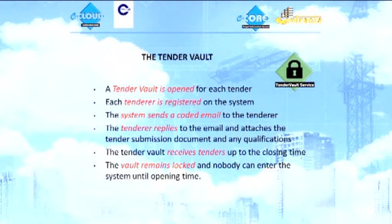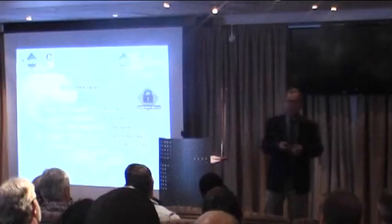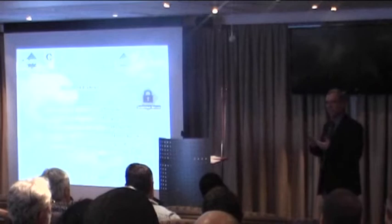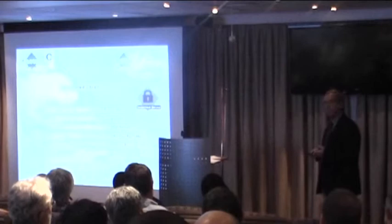The tender vault is open for each tender. A series of tenderers are logged on against that particular tender. The system sends out a coded email to each of the tenderers. They merely reply to that email, attach their tender, and any qualifications that they have to the tender. The vault remains closed and cannot be interfered with by anybody until the opening date of the vault. So if you submit your tender, one of the problems with email at the moment is if you're doing an electronic tender and you send it one minute early, you never really know whether someone has got your number and just passed it on to his mate and his mate comes in with a tender 30 seconds later, a few rand below yours. That can't happen. The tender vault stays closed and on a given time it opens and then you can retrieve the information out of the tender.